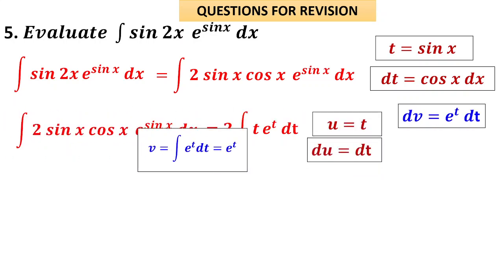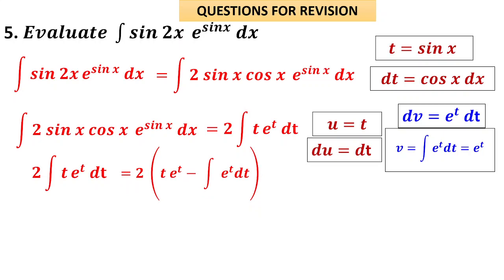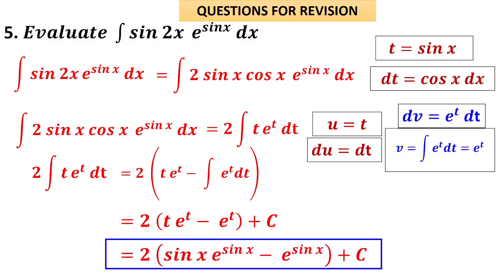Take u = t, dv = eᵗ dt, du = dt, v = eᵗ. Applying uv − integral v·du: t·eᵗ − integral eᵗ dt. The answer is 2(t·eᵗ − eᵗ) + c. Resubstituting t = sin x: the final answer is 2·sin x·e^(sin x) − 2·e^(sin x) + c. We used the sin 2x formula, then substituted t = sin x to reduce to an integration by parts problem.